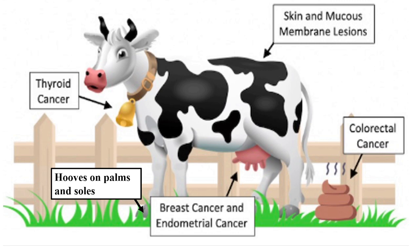Now visualize the cow wearing a bell on its neck — this represents thyroid involvement. A patient with Cowden Syndrome may present with a goiter, thyroid adenoma, or some may even develop papillary or follicular thyroid carcinoma.